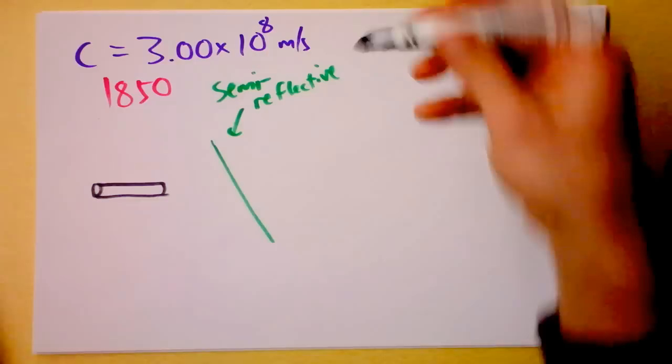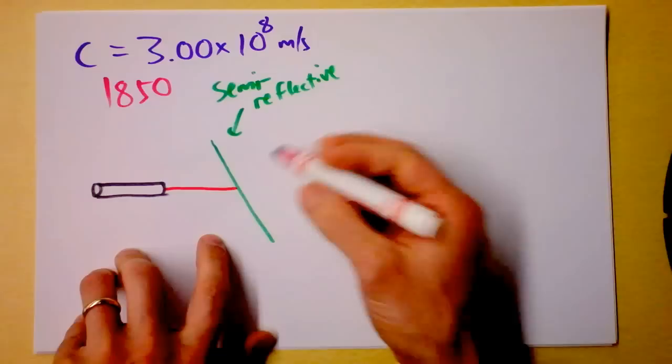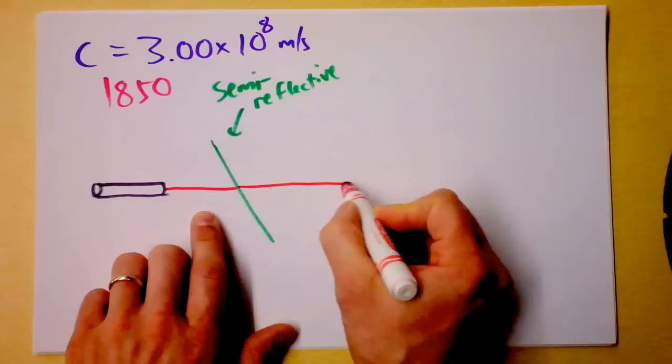And the laser light, anyway, comes out here, and it goes pew, and some of it reflects off of here, but we don't care about that. But what I'm concerned about is that some of it goes through and passes through this devious device.